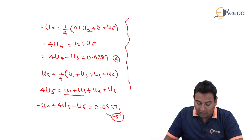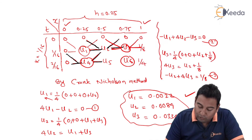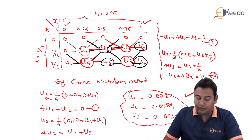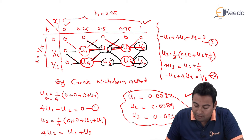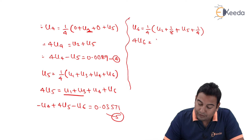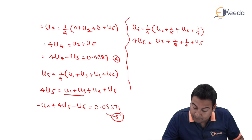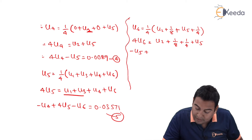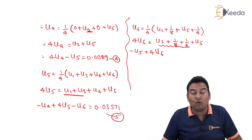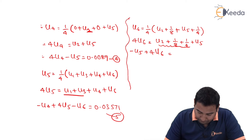For u6: the relevant values are u2, 1/8, u5, and 1/4. Cross-multiplying: 4u6 = u2 + 1/8 + 1/4 + u5. Moving unknowns to the left: −u5 + 4u6 = u2 + 1/8 + 1/4. Since u2 = 0.0089, adding the known values gives 0.3839. So: −u5 + 4u6 = 0.3839. This is equation number 6.